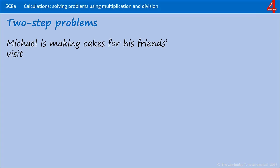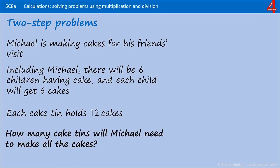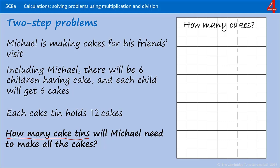Michael is making cakes for his friend's visit. Including Michael, there will be six children having cake and each child will get six cakes. Each cake tin holds 12 cakes. How many cake tins will Michael need to make all the cakes? First of all we need to find out how many cakes he's got to make. Including Michael there will be six children and each child will get six cakes, so this first part of the question is a multiplication: six times six. If you know your six times tables you'll know that that's 36, so we know that he needs 36 cakes.